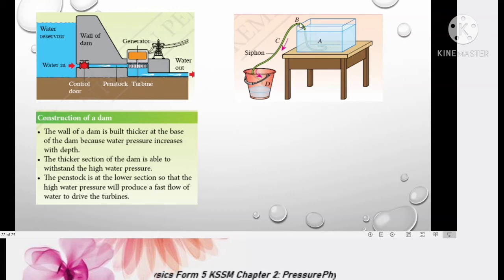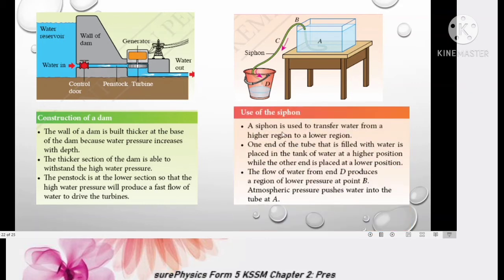The fourth one is siphon. If you want to remove water from a very big container like this, it is impossible for you to lift up the container because it is very heavy. So one method to remove water from a large container A to D is by using siphon method. A siphon is used to transfer water from a higher region to a lower region. One end of the tube that is filled with water is placed in the tank of water at high position, while the other end is placed at lower position. The flow of water from N D produces a region of lower pressure at point B. Atmospheric pressure pushes water into the tube at A.